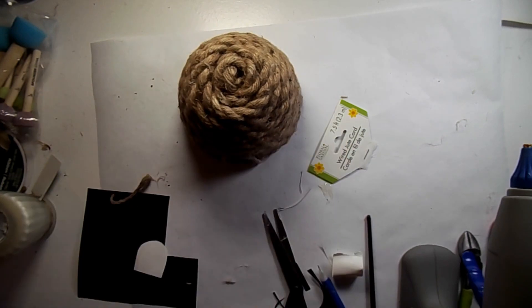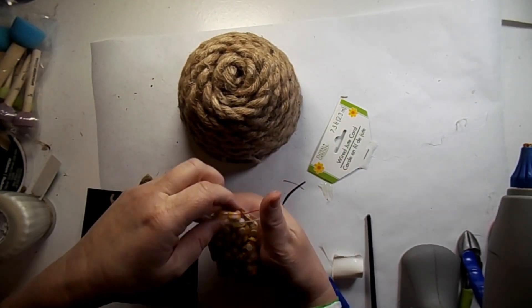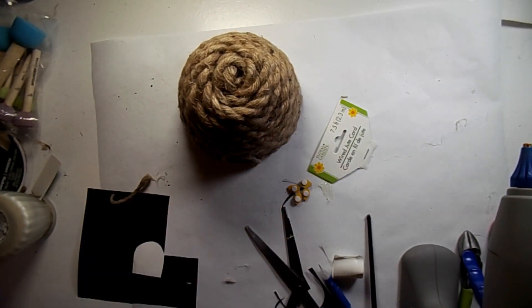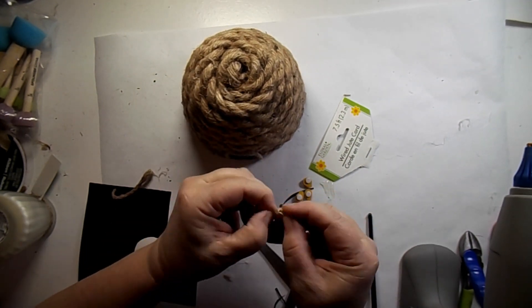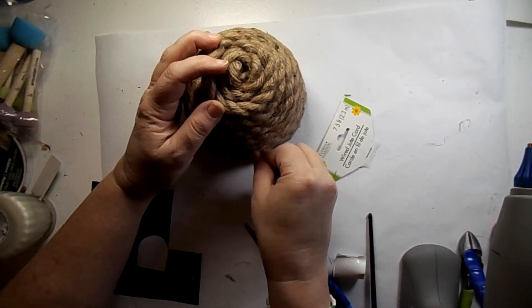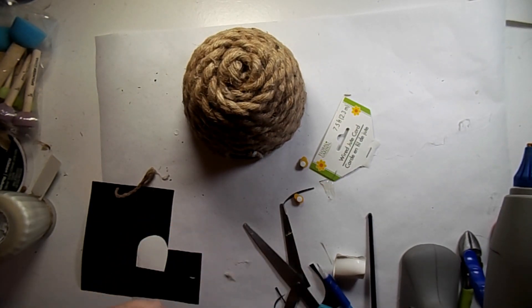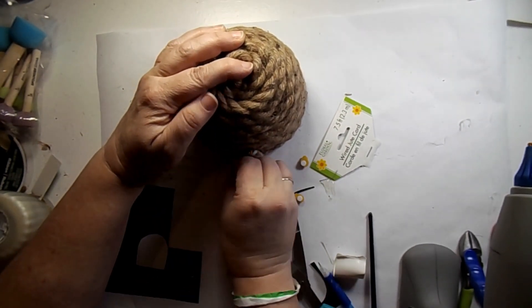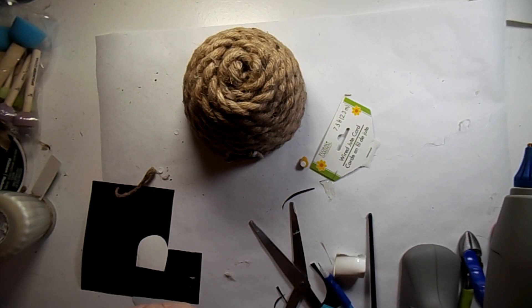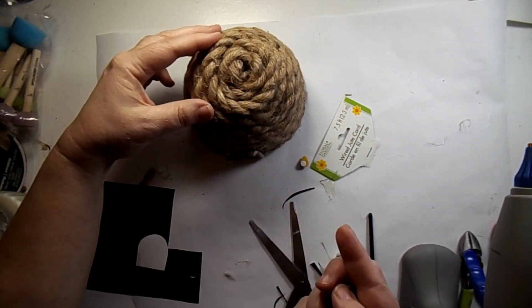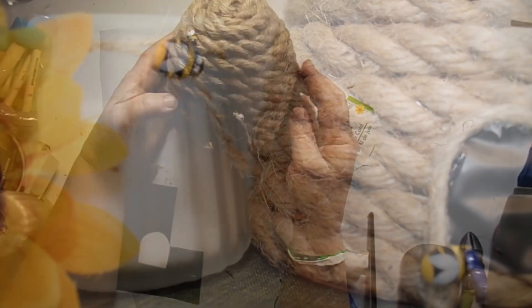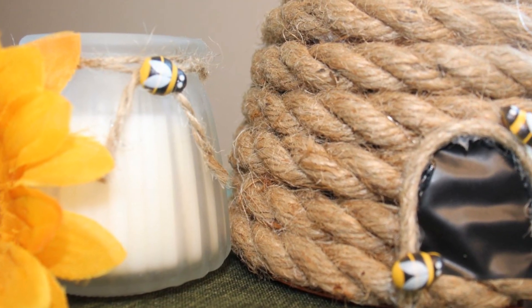All right. Isn't that adorable? Now I got these little bees off of Amazon and so I'm just taking off the little sticker and sticking them on because they are pretty darn sticky. You could definitely put hot glue on the back of these, but they have stayed on there since I attached them. Aren't they cute?